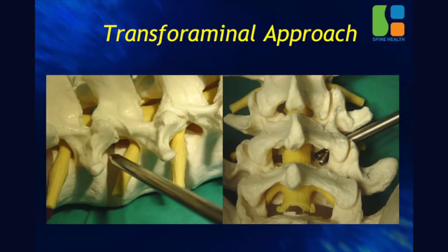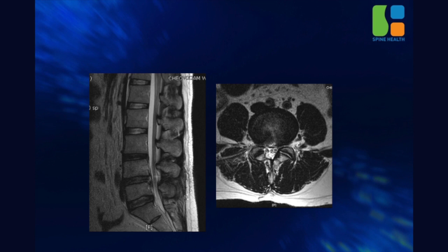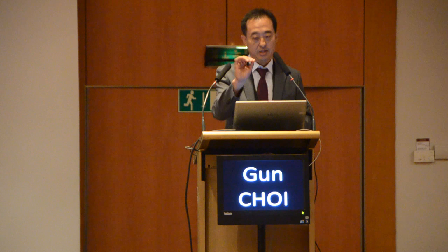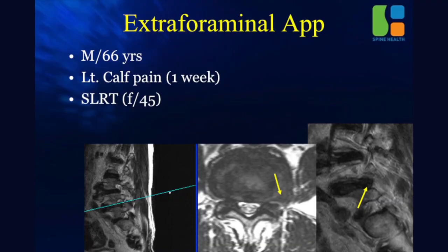A very important issue is the exiting root injury — think three-dimensionally. The exiting root varies. If your angle of approach is too horizontal, you may injure the exiting root. During my procedure, if I insert the dilator and the patient complains of pain with root symptoms, it seems to involve the exiting root. In that case, I change the skin entry point slightly medially to avoid the exiting root, because I know where it is.